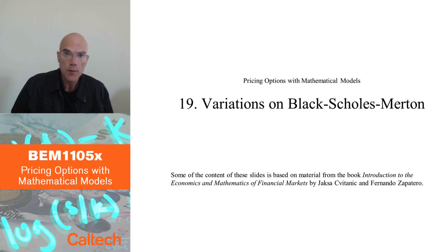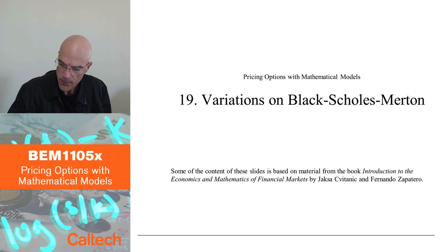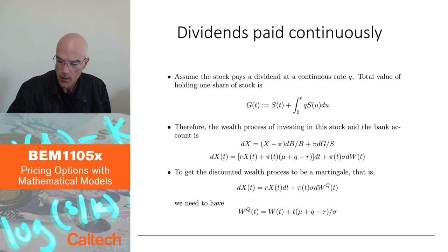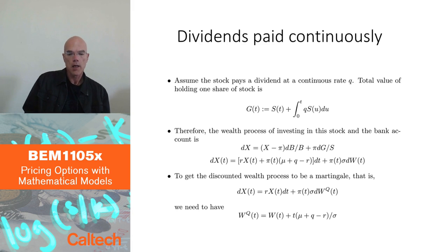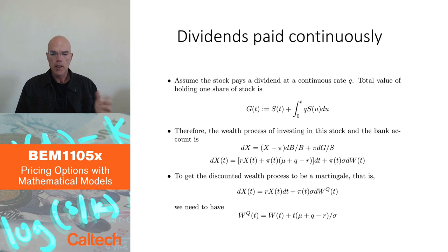We have the basic Black-Scholes formula for the vanilla call option and put option, also using put-call parity. Let's see how we can extend this to some other situations, still in the Black-Scholes-Merton model. The first thing we are going to do is dividends, and we are going to look at two cases, none of which is necessarily very realistic, but they are very tractable and can give you an approximate answer.